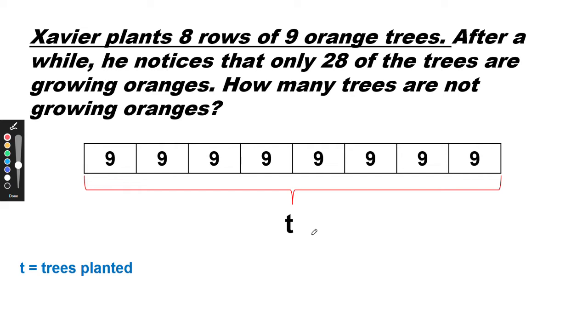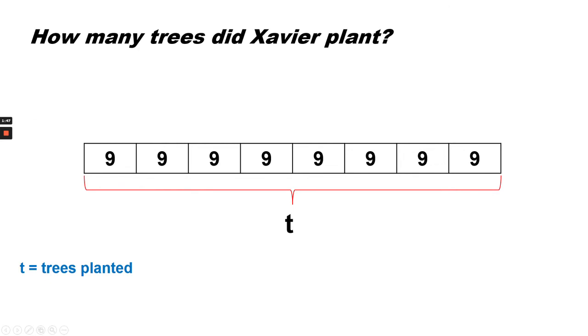Javier plants eight rows of nine, so there are one, two, three, four, five, six, seven, eight boxes with nine in each box. So that's the first thing we want to solve for: what is T? How many trees did Javier plant? Javier planted 72 trees because eight times nine equals seventy-two. So T equals seventy-two.